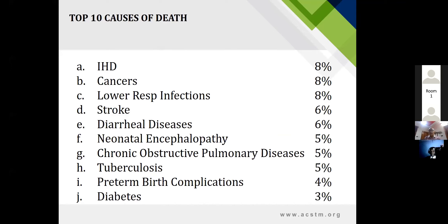If we look at the relevance or context of the causes of death in Pakistan: ischemic heart disease accounts for 8%, cancers 8%, lower respiratory tract infections 8%, stroke 6%, diarrheal diseases 6%, neonatal encephalopathy 5%, chronic obstructive pulmonary disease 5%, tuberculosis 5%, preterm birth complications 4%, and diabetes around 3%.